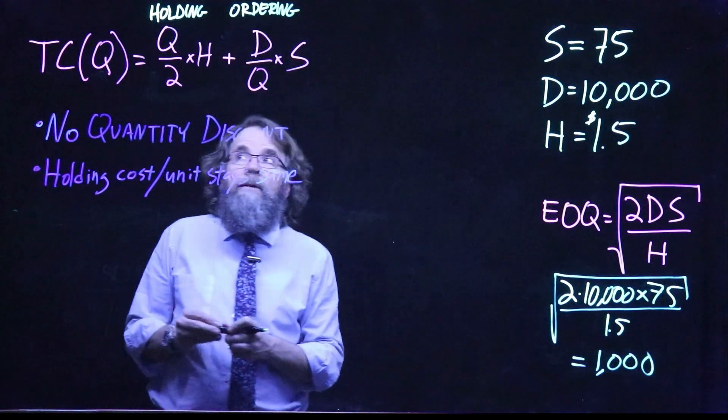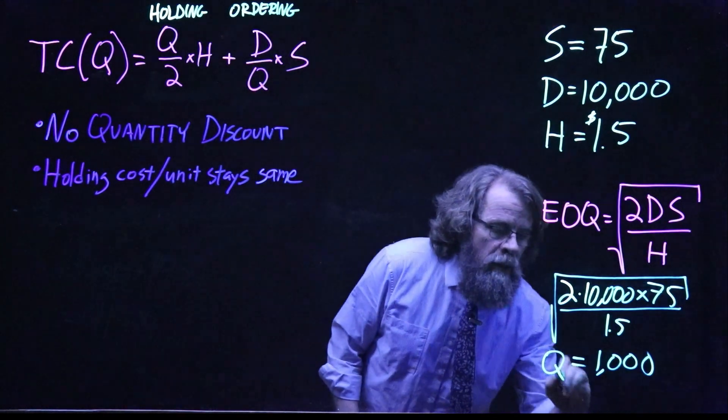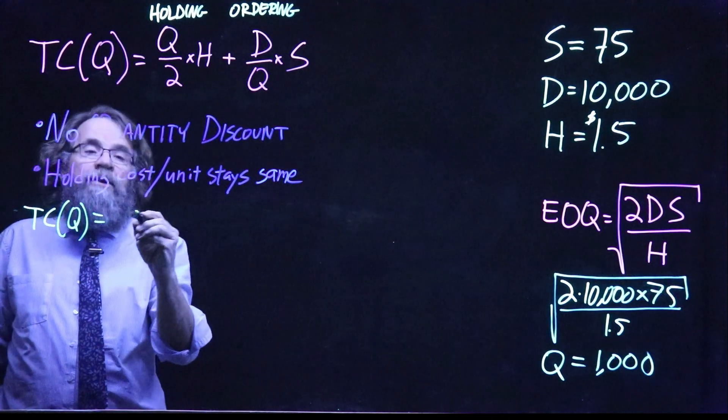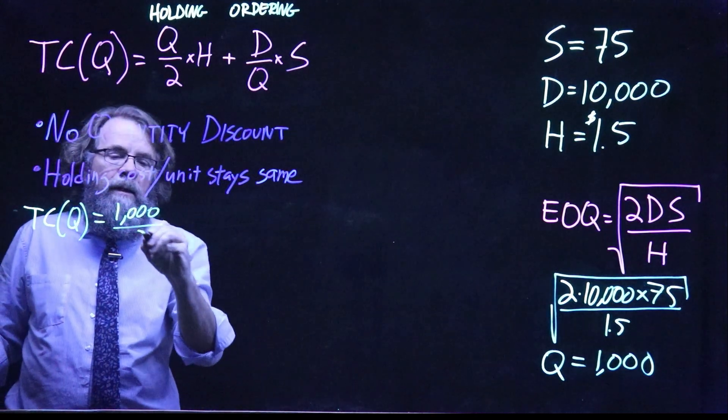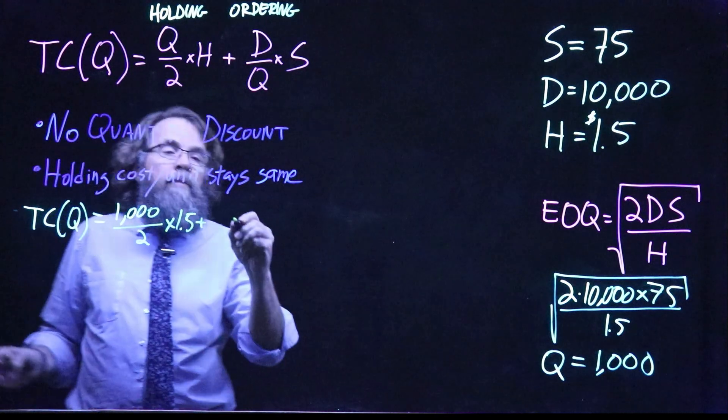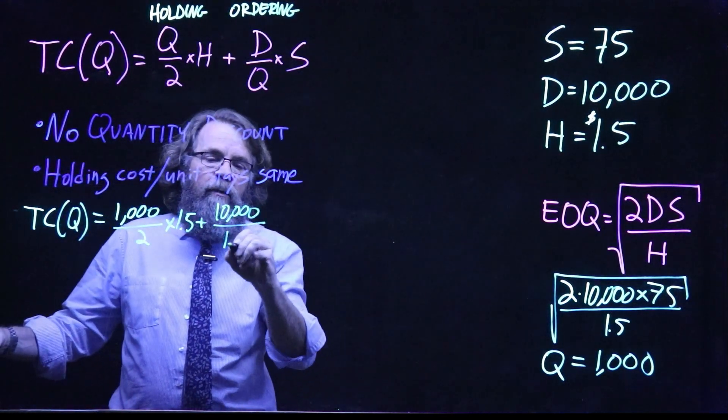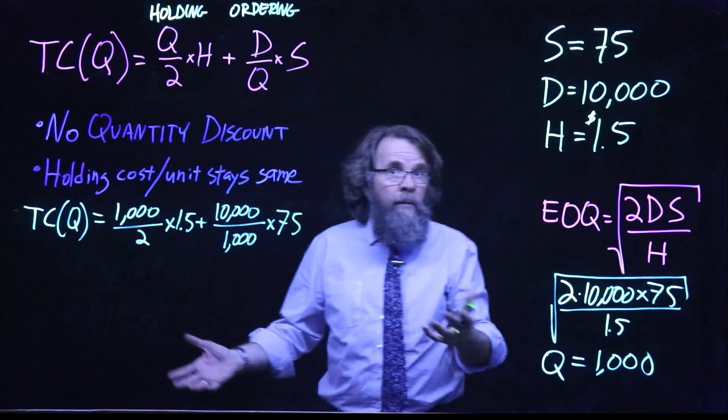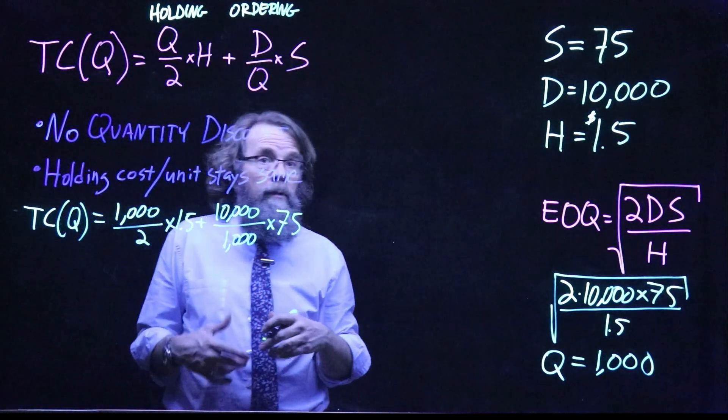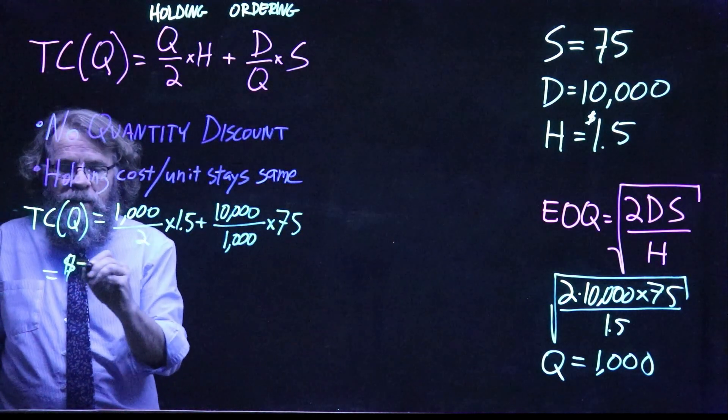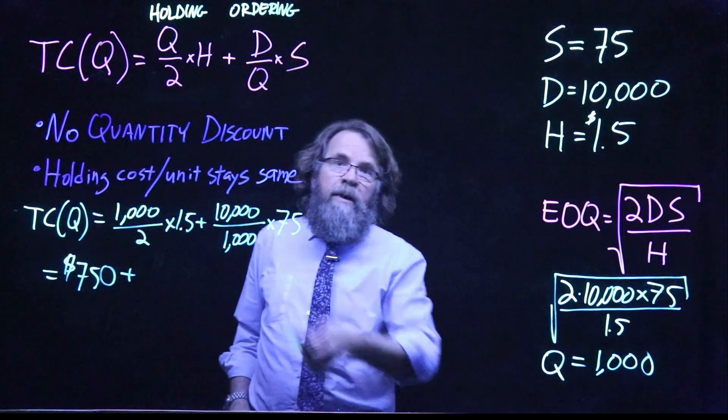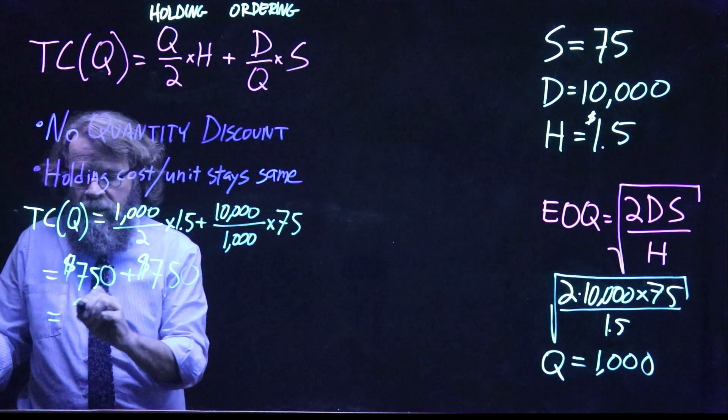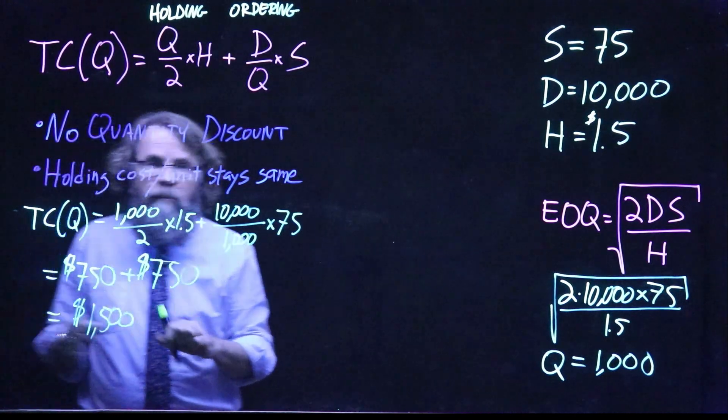Now we want to calculate the total cost as a function of this order size Q, 1,000 units. So we're going to say total cost as a function of this order size Q is 1,000 divided by 2 times the holding cost of $1.50 plus annual demand of 10,000 divided by the order size of 1,000 times the ordering cost of $75. So now we just do the math. 1,000 divided by 2 is 500 times $1.50 gets us $750. And then 10,000 divided by 1,000 is 10 times $75 is also $750. So we get the total holding plus ordering cost of $1,500.